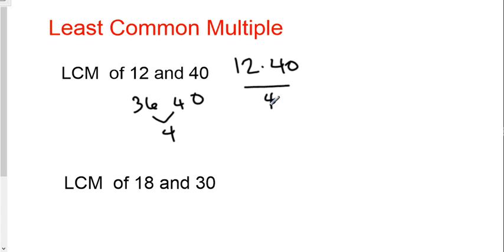In this case, I'm going to do 40 divided by four, which is 10. So this becomes 10, and then I'm going to multiply it by the 12, which gives 120. And that is the LCM.